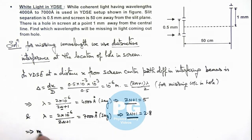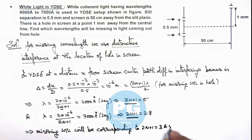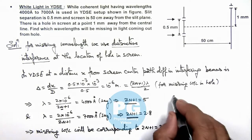This implies missing wavelengths will be corresponding to 2n+1 equal to 3 and 5, as it varies from 2.8 to 5. There are only two integers which are possible between this range: those are 3 and 5.